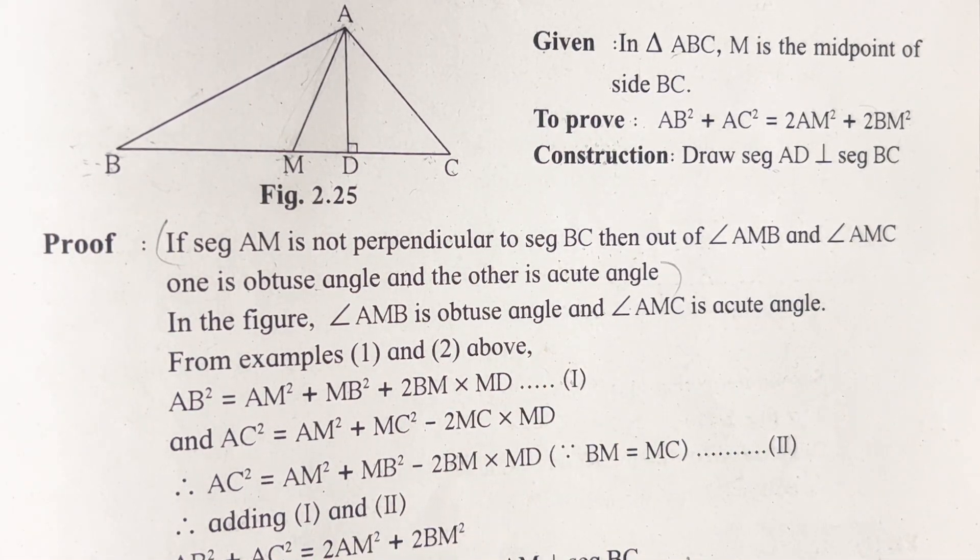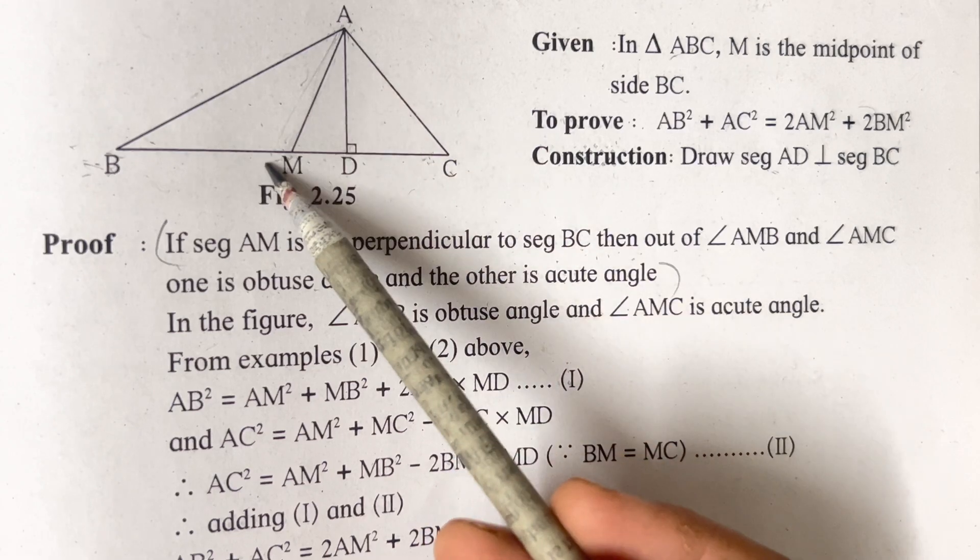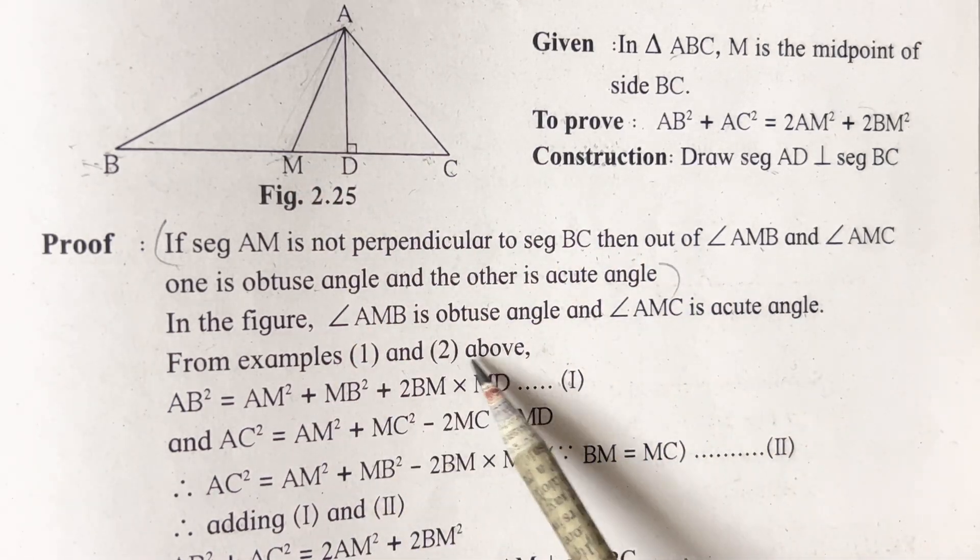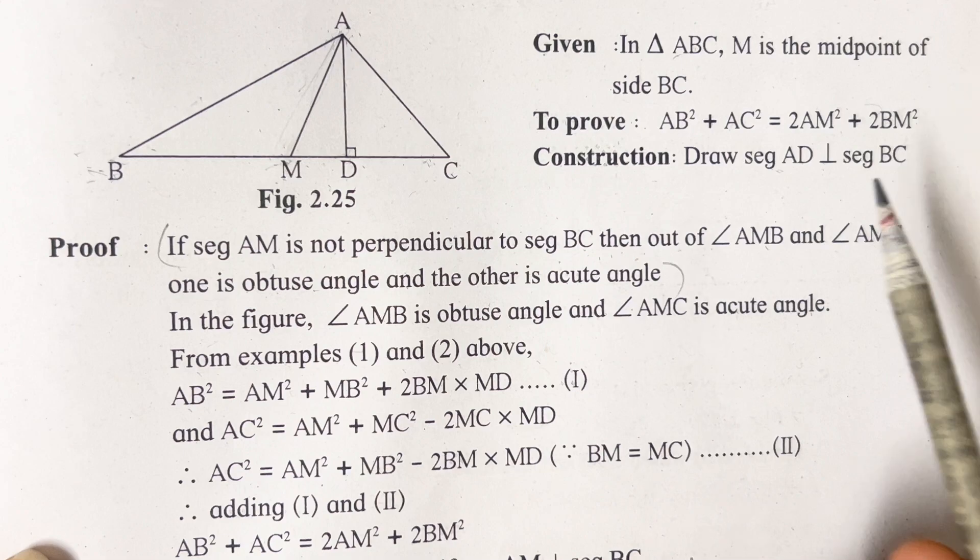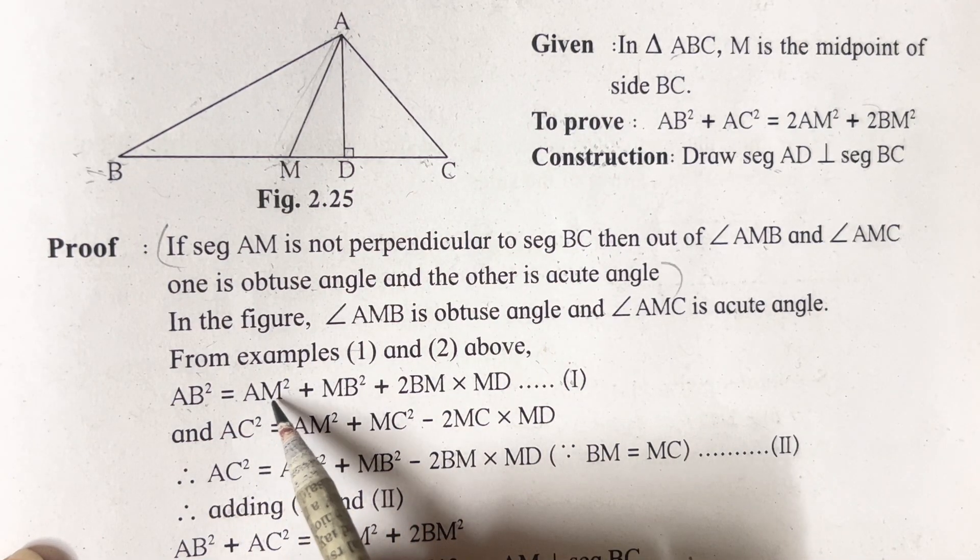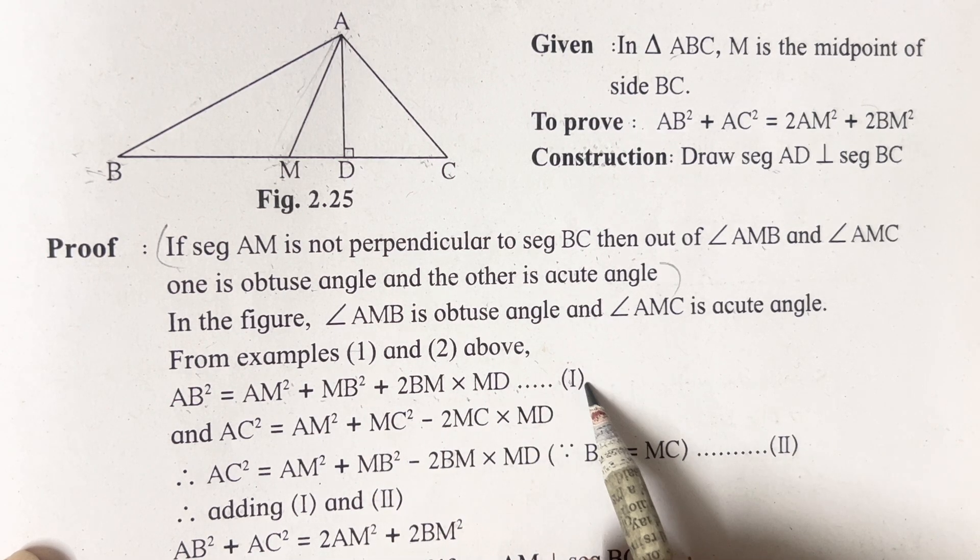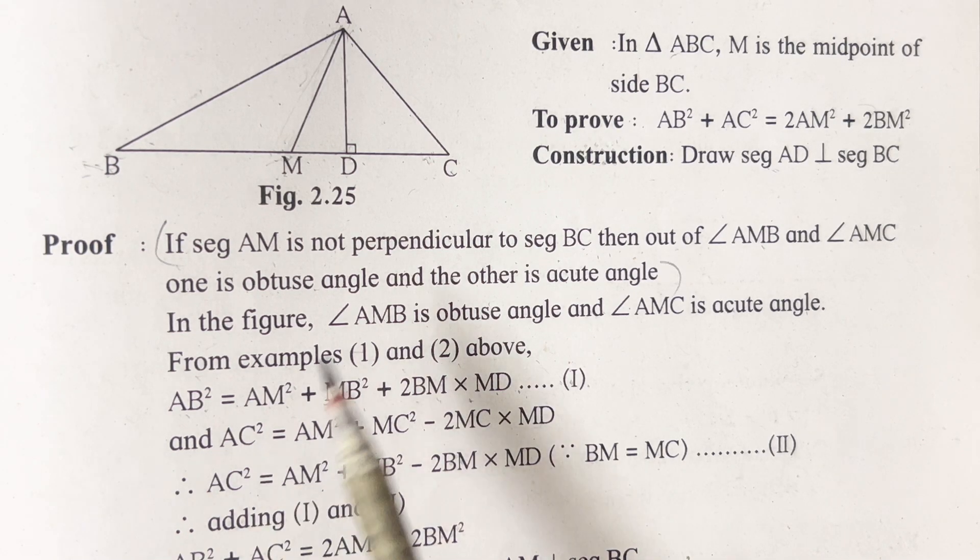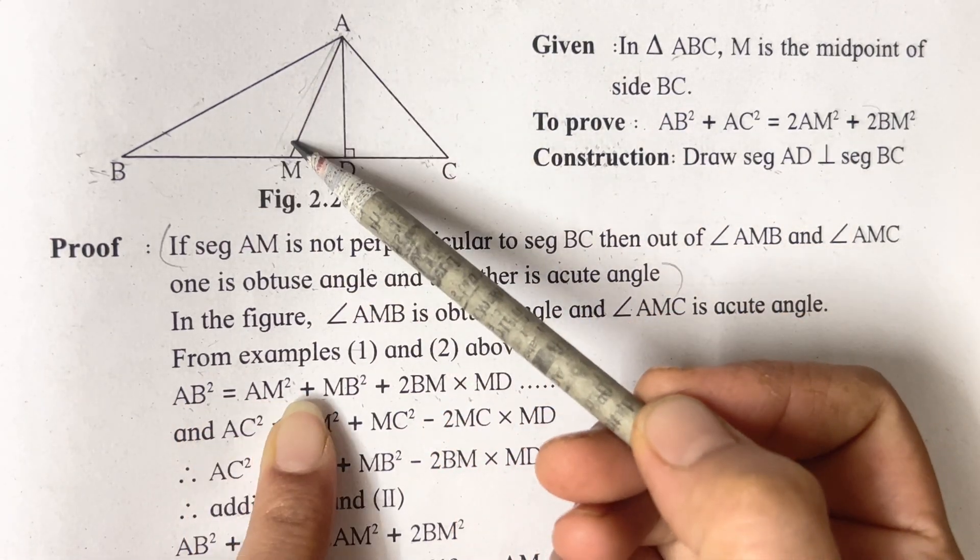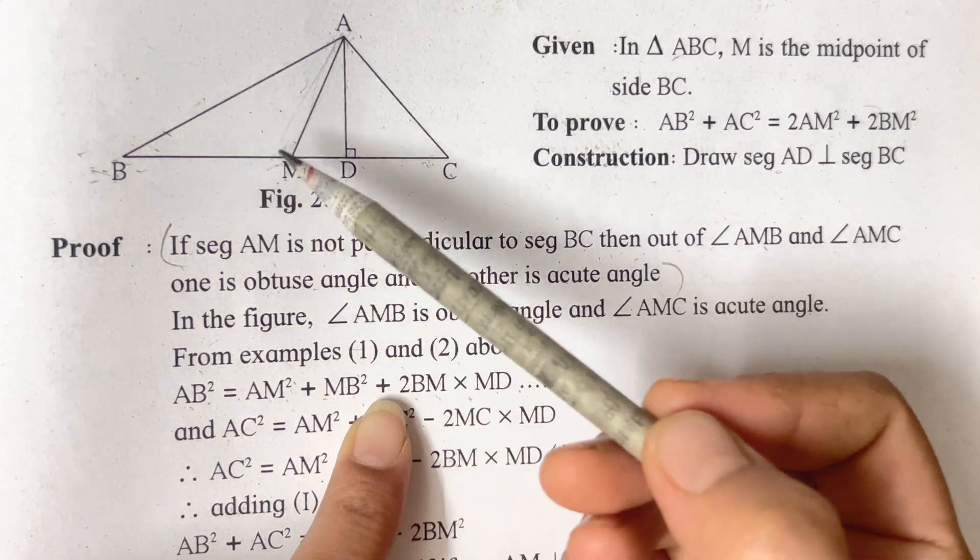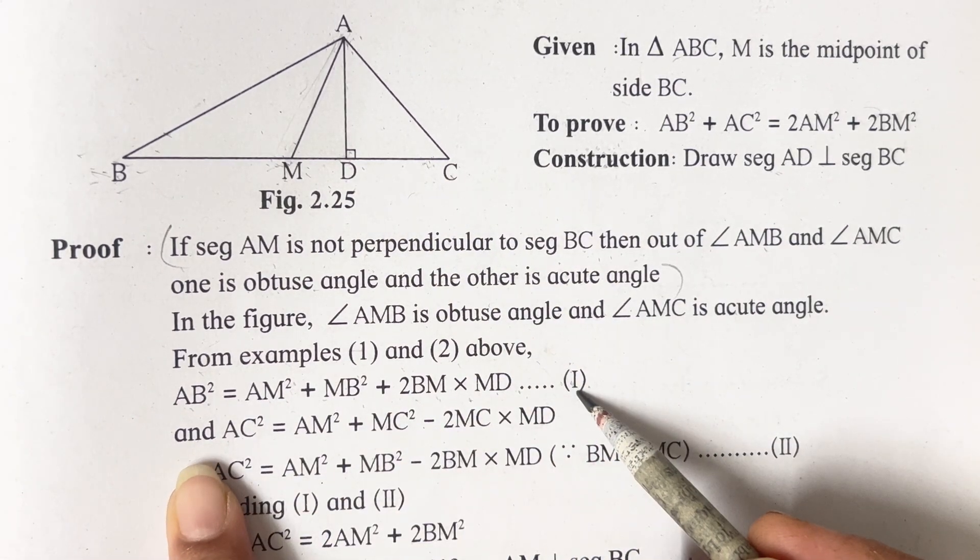So this is an important statement which you have to mention, on this statement your other things are going to depend upon. In the figure, angle AMB is the obtuse angle and AMC is the acute angle. From examples 1 and 2 above, AB square is equal to AM square plus MB square plus 2BM into MD. This is the first thing we are going to get from the statement. This is going to be your first reason.